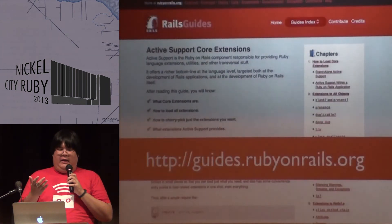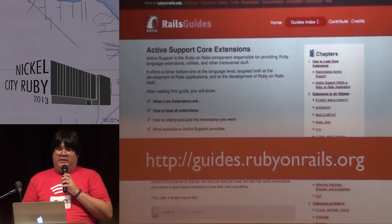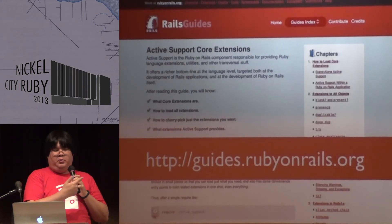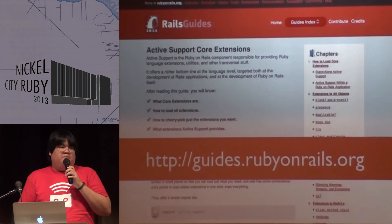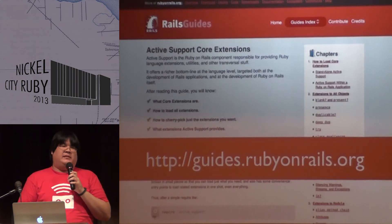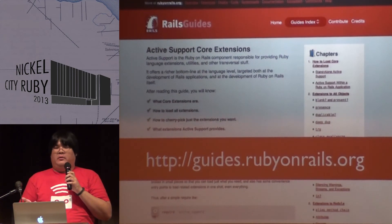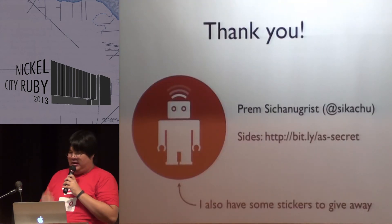And that's the last thing I have. There are a lot of resources on the Ruby on Rails guides that cover core extensions. I think you should go there and look it up. There are a lot of awesome things that ActiveSupport has for you, so you don't have to reinvent the wheel by writing some crazy custom code. Thanks, that's all I have.